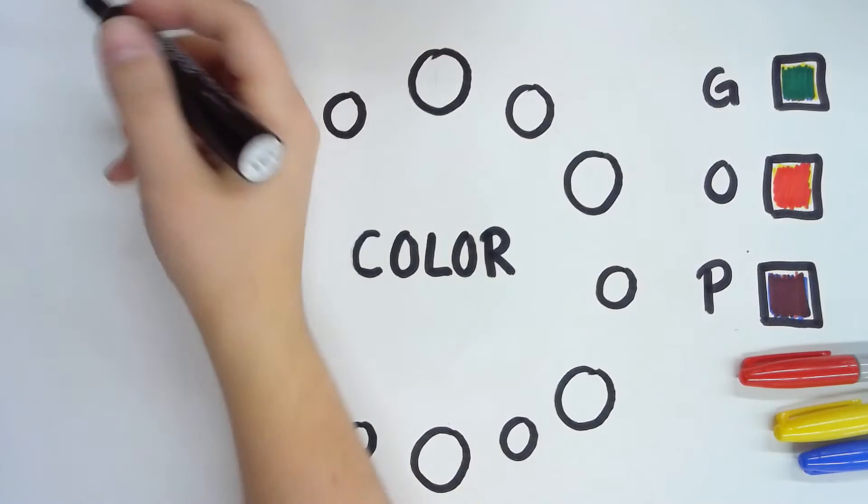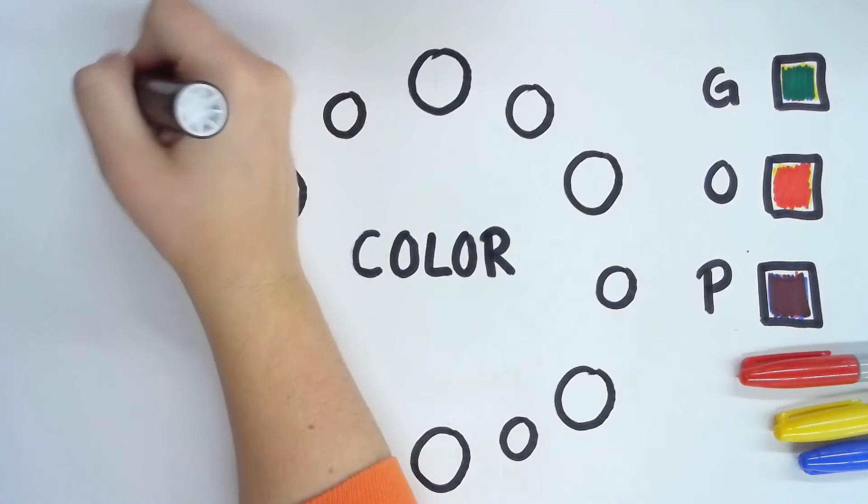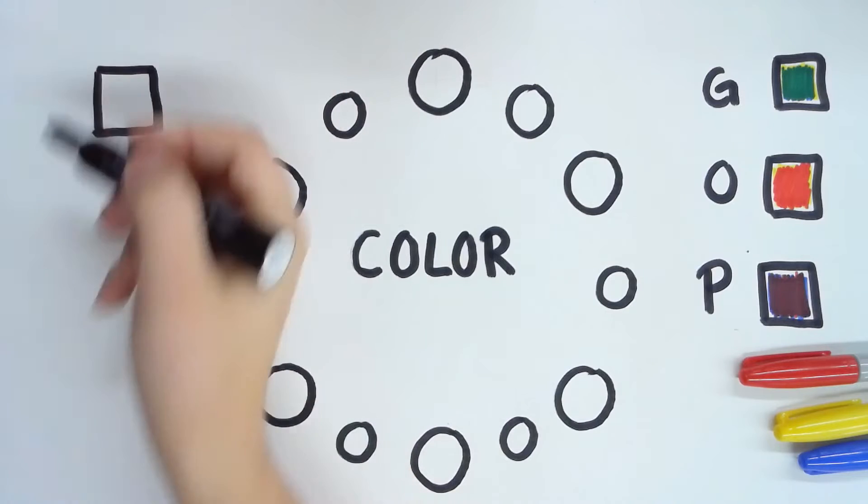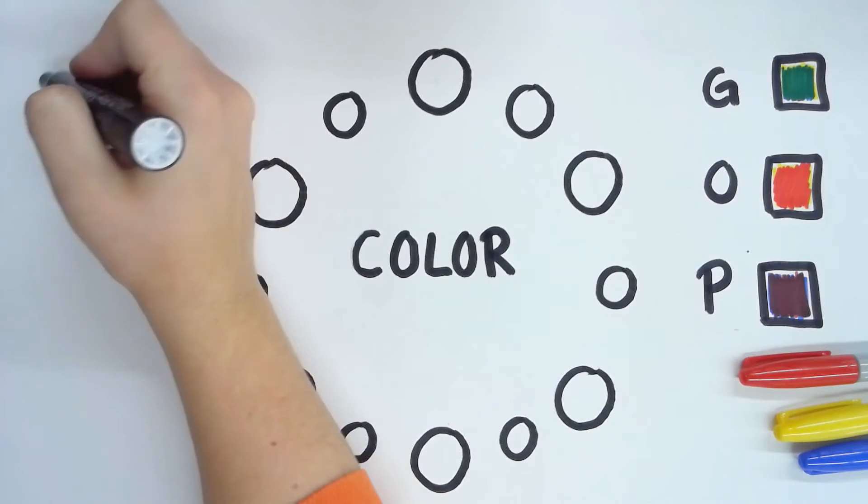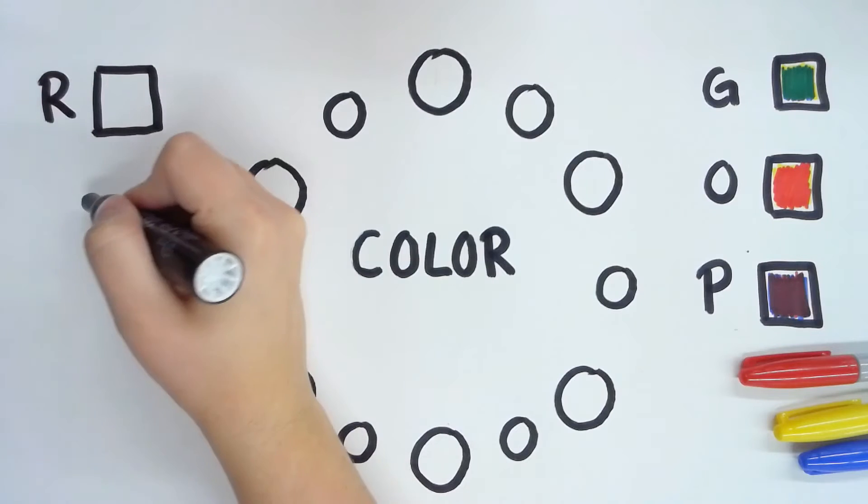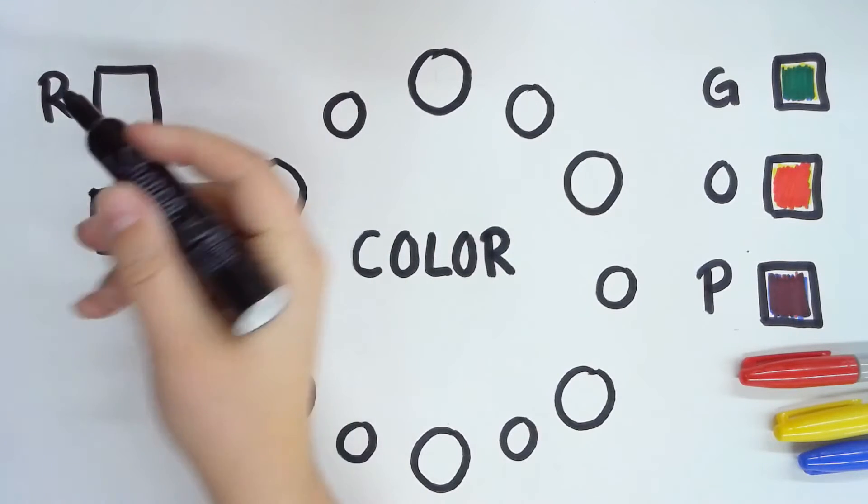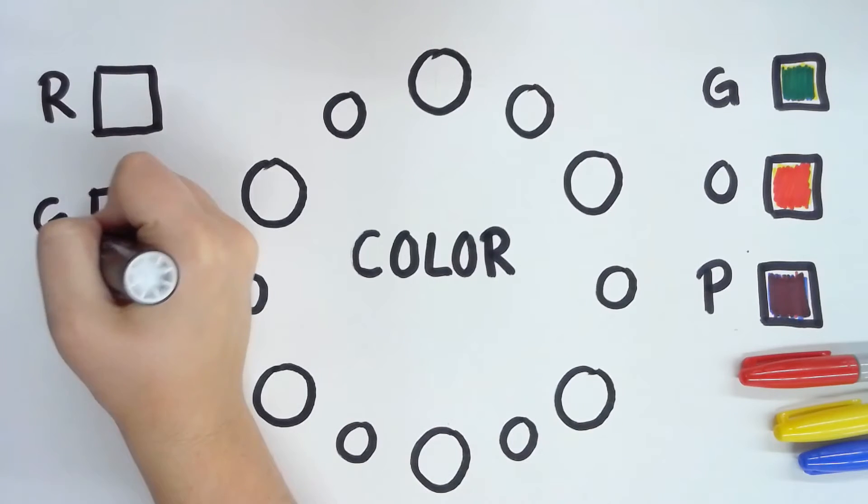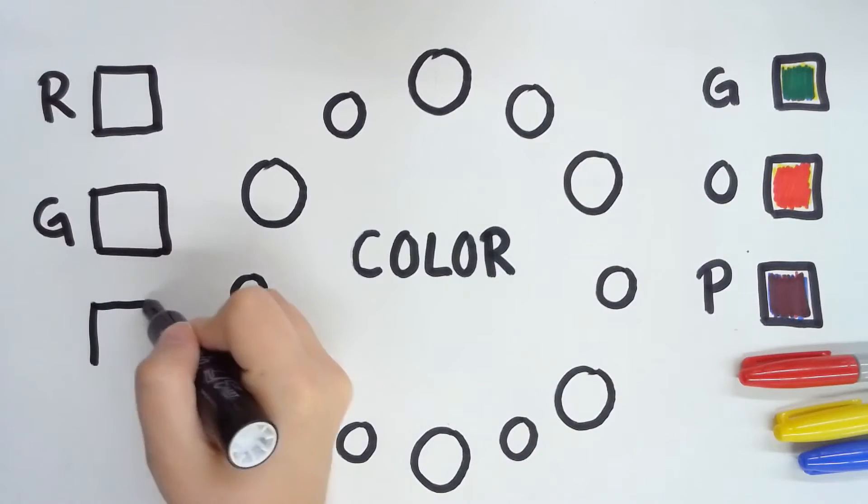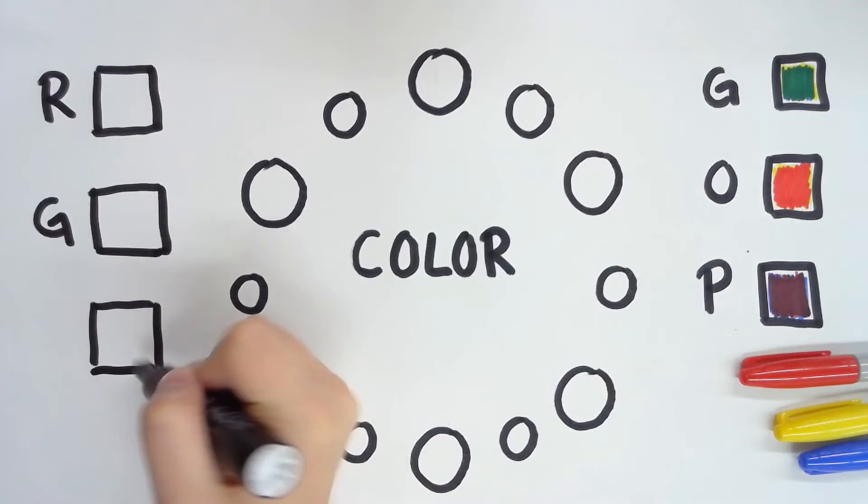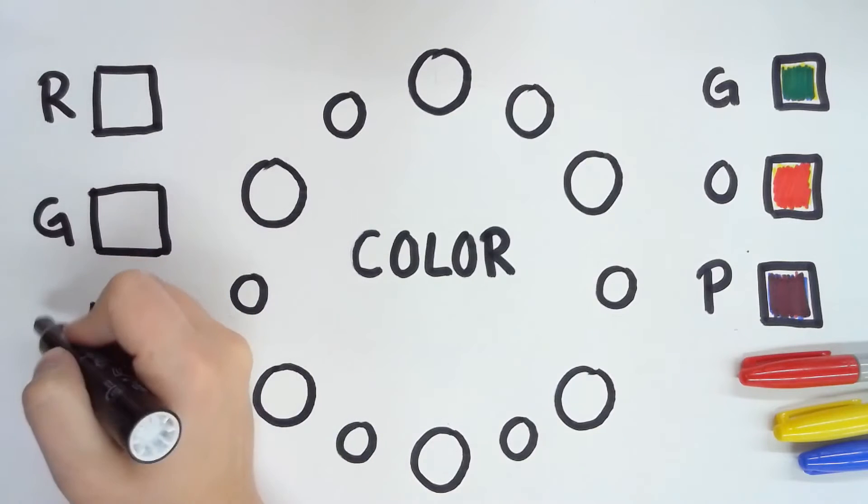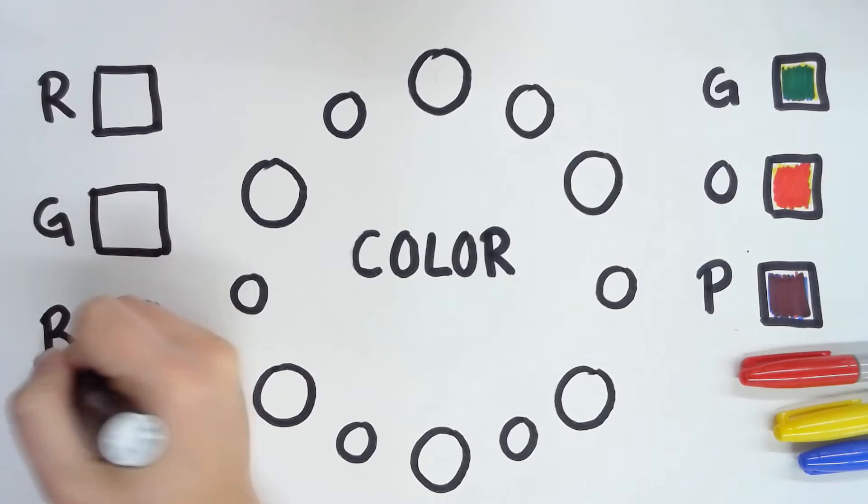When you're working with cyan, magenta, and yellow, if you're using that color wheel, you should be able to mix magenta and yellow together and you get red. And you should be able to mix cyan and yellow together and get green. And you should be able to mix your magenta and cyan together to get a dark blue, or just a regular blue.